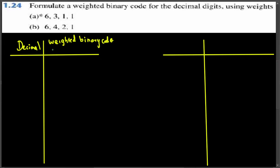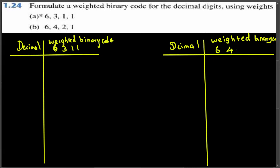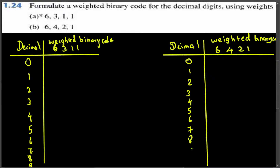The first code provided is 6-3-1-1 and the second one is 6-4-2-1. Let's list the decimal numbers zero through nine for each of these weighted binary codes.